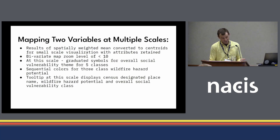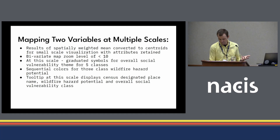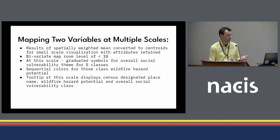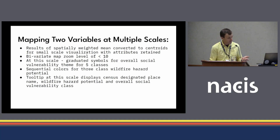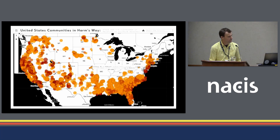I ultimately converted those polygons to centroids to begin thinking about mapping the data at multiple scales. The map uses different thematic representations at different scales. At zoom levels less than 10, it uses graduated symbology to display the overall social vulnerability index theme by census-designated place, and sequential colors to display the three-class wildfire hazard potential, resulting in a bivariate map. At the same zoom level, there's also a tooltip showing census-designated place name, wildfire hazard potential, and the overall social vulnerability index.